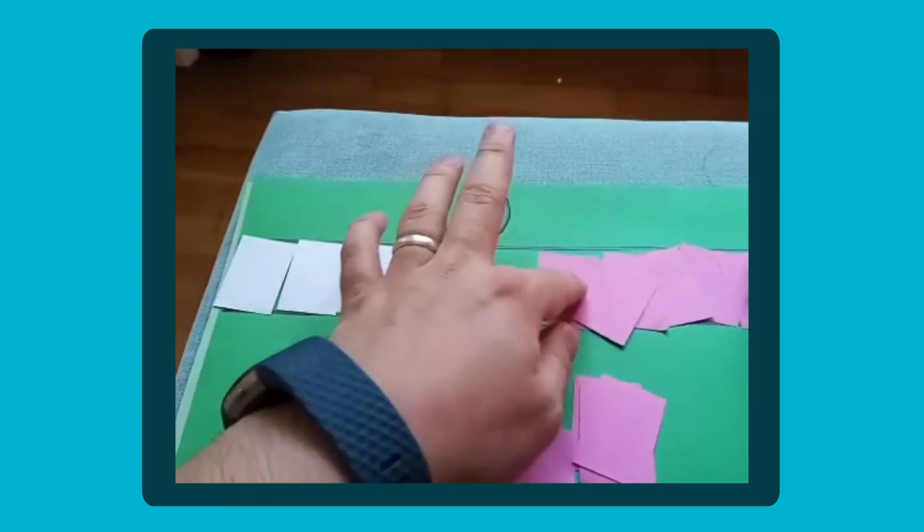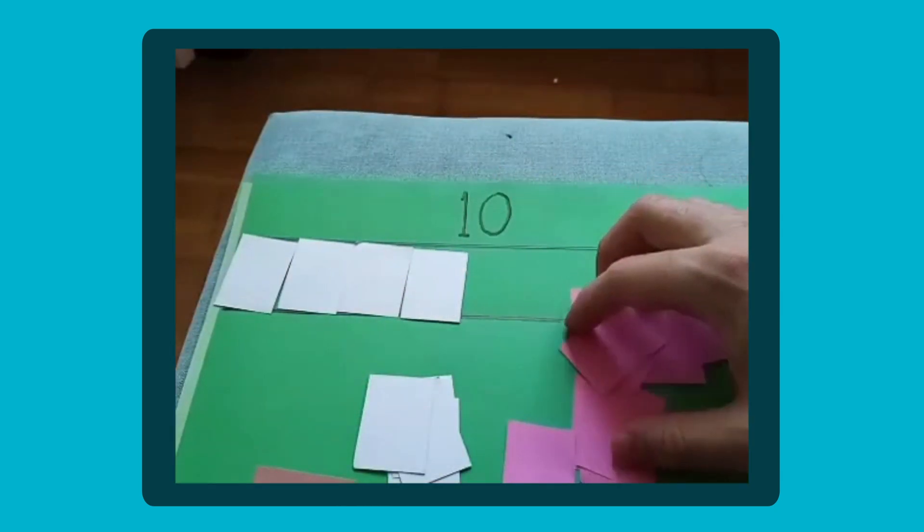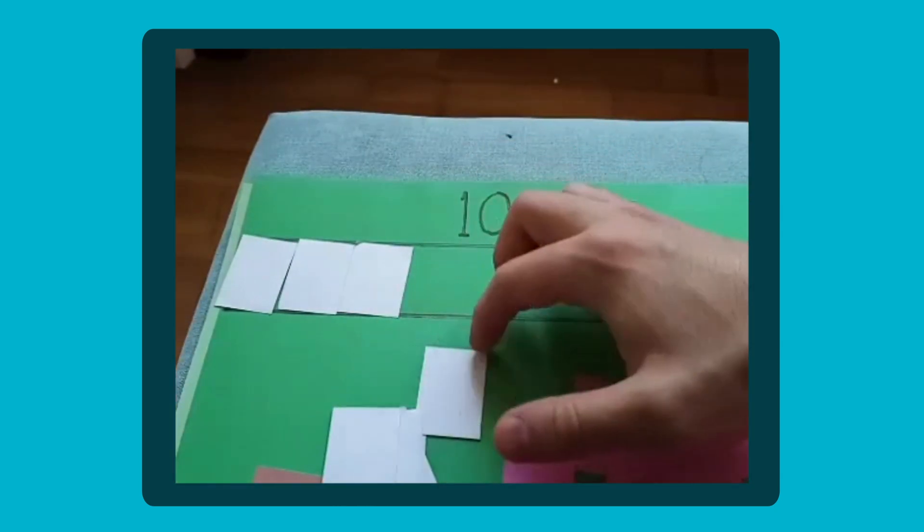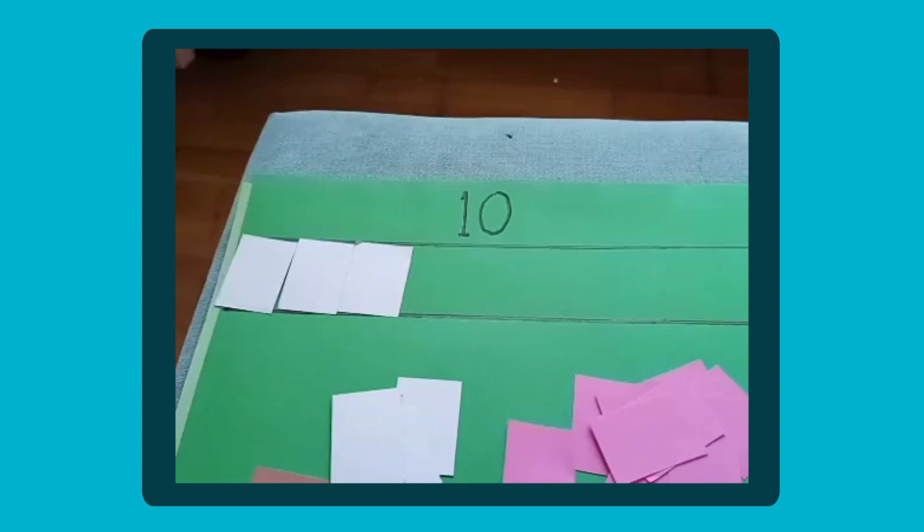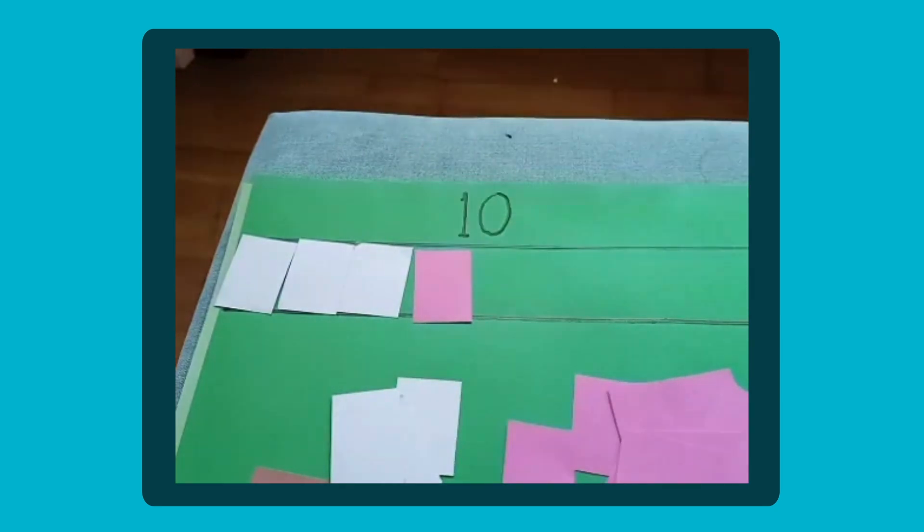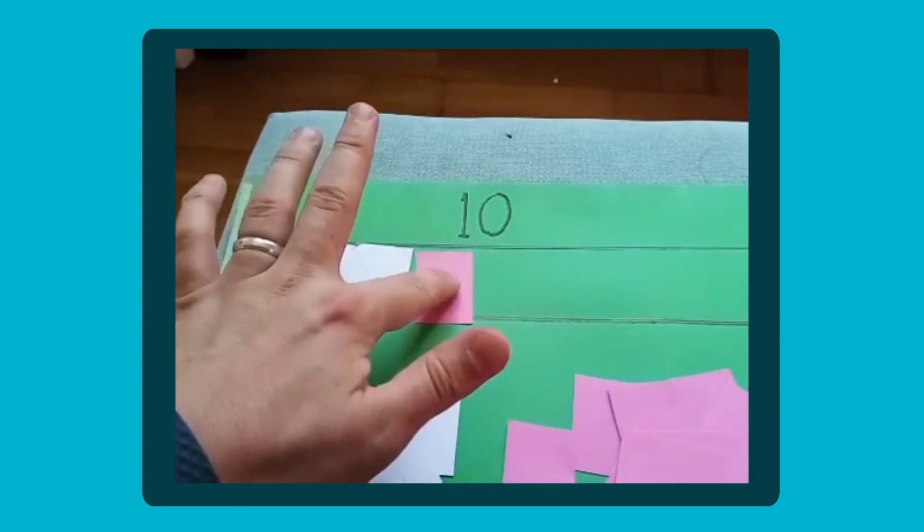You can divide that up in any number of different ways. So you could decide that you're going to start off with three and ask children to find out how many need to be added to three to make 10 and then they can just literally count across. I'm not going to do the whole thing but they would count across and find that it's seven that fits in that bar.